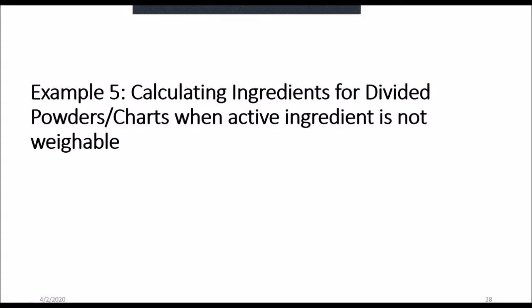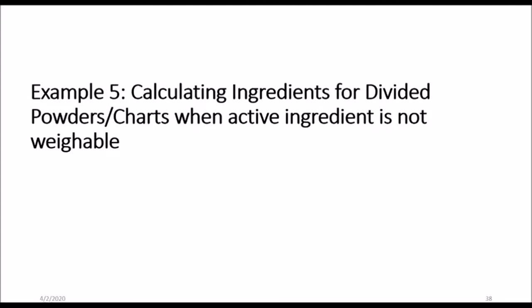Welcome back students. We are on our final lesson, our final example for divided powder charts. Just to recap, we looked at calculated ingredients using the pure ingredient, using one ingredient, more than one ingredient, source of ingredient in the triturate holder, source of ingredient in the tablet, and now we are looking at calculation of ingredients for the divided holders where the active ingredient is not weighable.